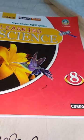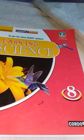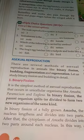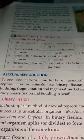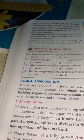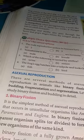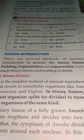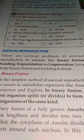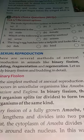I have told you about how to reproduce insects, and today I am going to discuss the topic of sexual reproduction. There are several methods of sexual reproduction, such as Binary Fission, Budding, Fragmentation, and Regeneration. These are all the methods of sexual reproduction.